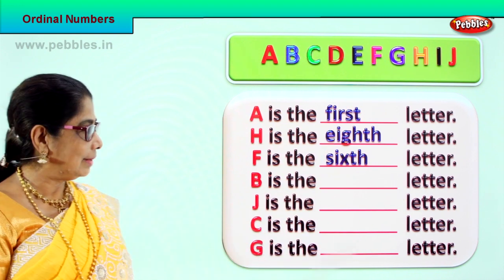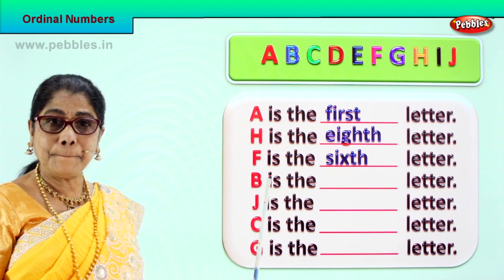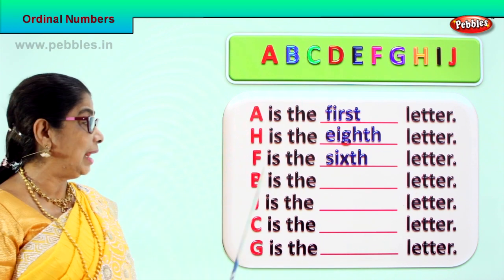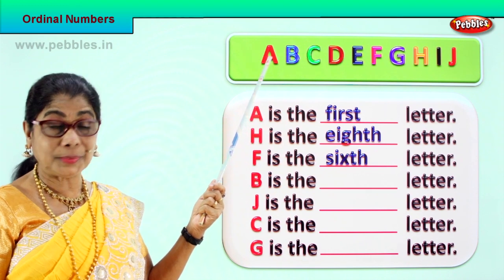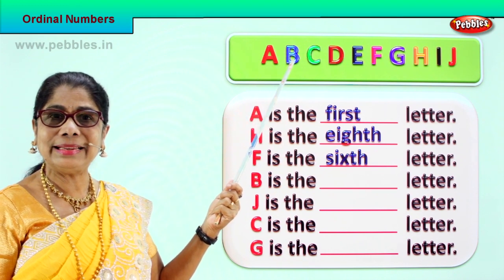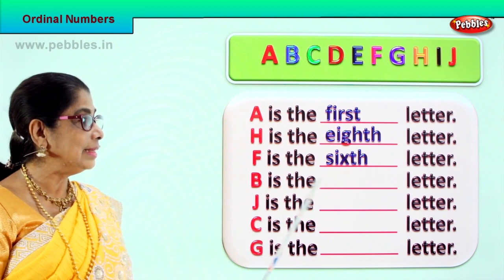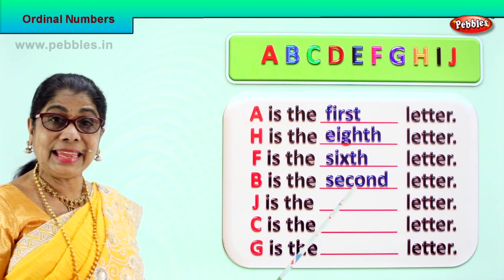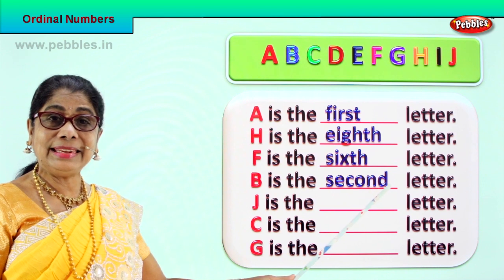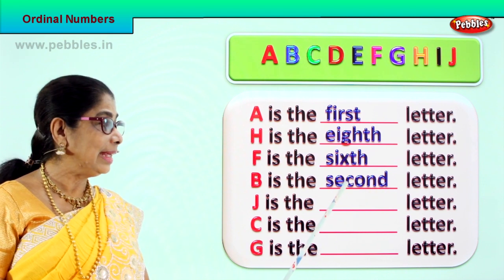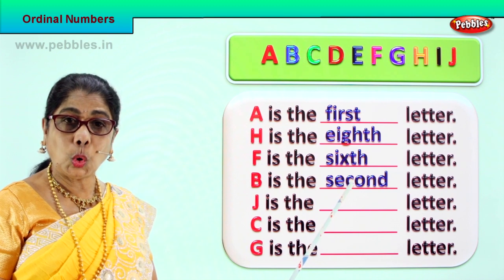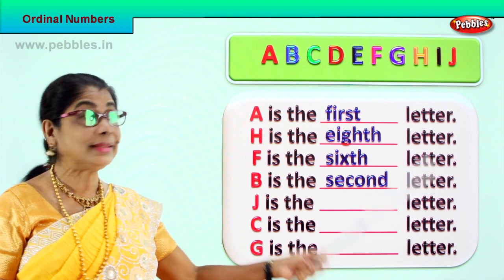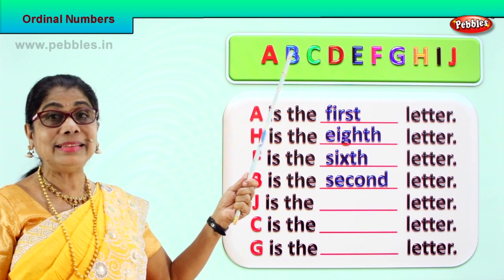Now let's look at the next letter — letter B. B is the what letter? What is the ordinal place for letter B? A is first, B is second. B is the second letter. Spell second: S, E, C, O, N, D. Second. B is the second letter.